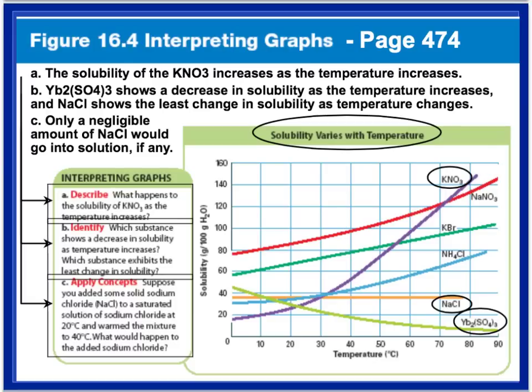One of the things we need to be able to do is read solubility graphs, or solubility curves. The first question asks: describe what happens to the solubility of potassium nitrate as temperature increases. Potassium nitrate is the purple line. As we look at the temperature axis, we can see that as temperature increases, the amount of solute that can be dissolved increases. So the solubility of potassium nitrate increases as temperature increases.